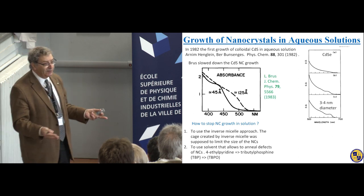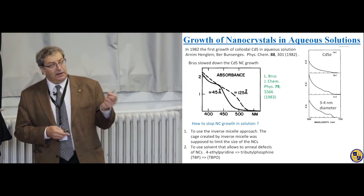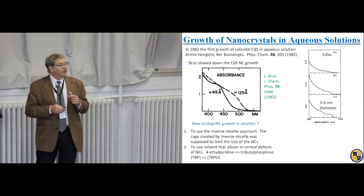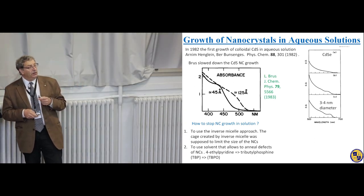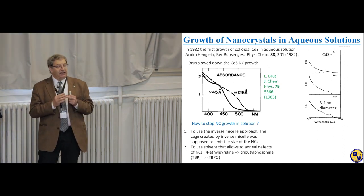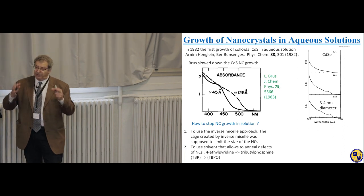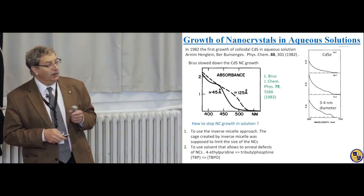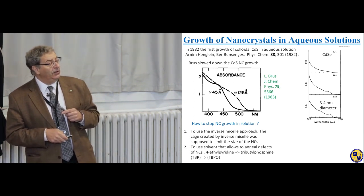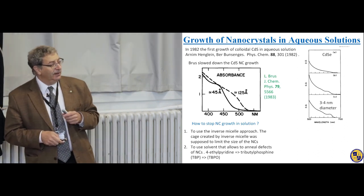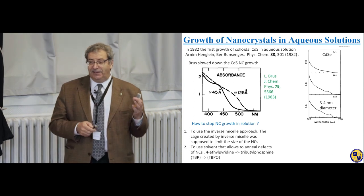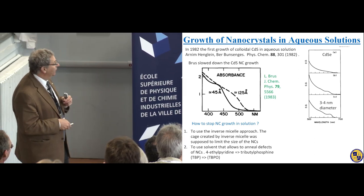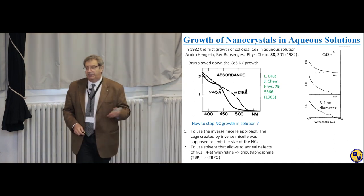The question at this point was how to stop this process — how to make arrested precipitation of grown nanocrystals. In glasses, it's very simple: just reduce temperature. In solution, you cannot do it because diffusion is also very fast. The first idea groups started to apply was growth of cadmium sulfide nanocrystals using an inverse micelle approach. The cage created by the inverse micelle was supposed to limit the size of nanocrystals. They also used a solvent to enable an annealing effect. Initially the solvent was 4-ethylpyridine, then TBP. Then by accident, Monge made a wonderful discovery: the best annealing material is a mixture of TBP and TOPO.